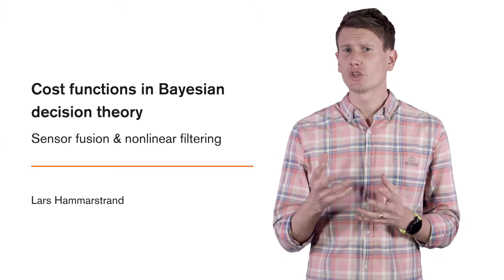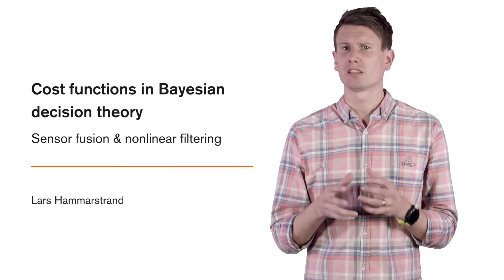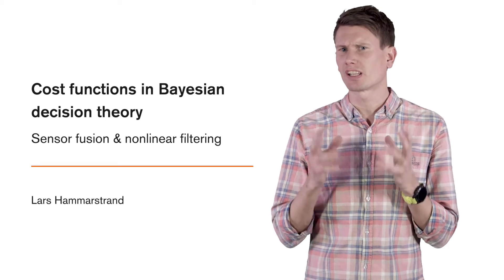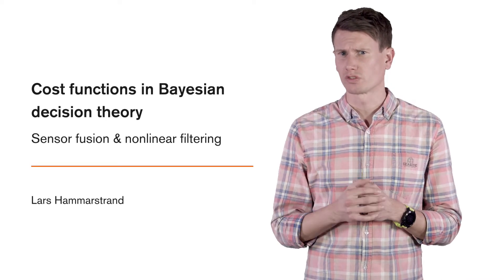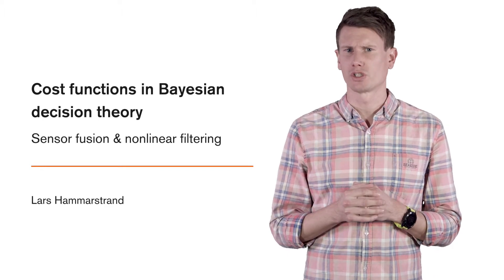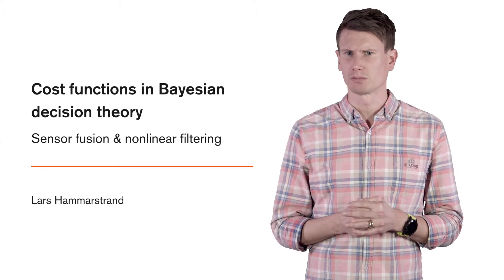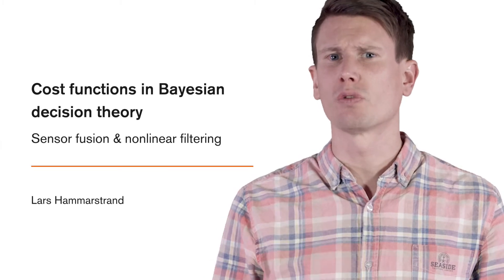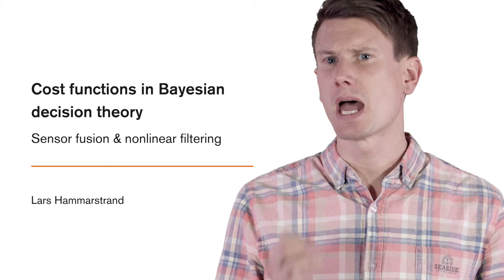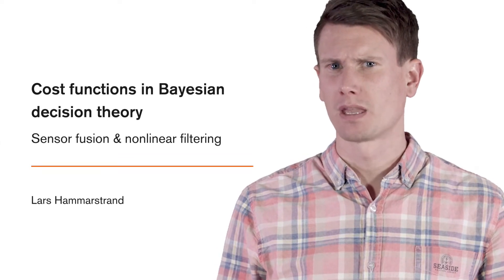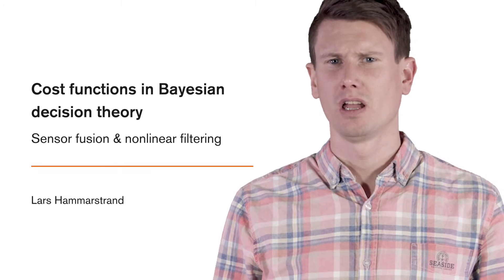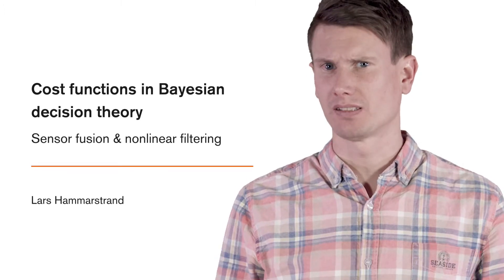In the previous video, we learned about the Bayesian decision principle, which is to try to minimize the posterior expected loss, or cost. In this video, we will introduce two commonly used loss functions for estimation problems. We will then use these to derive the minimum mean square error estimator, the MMSE estimator, as well as the maximum a posteriori estimator, also known as the MAP estimator.